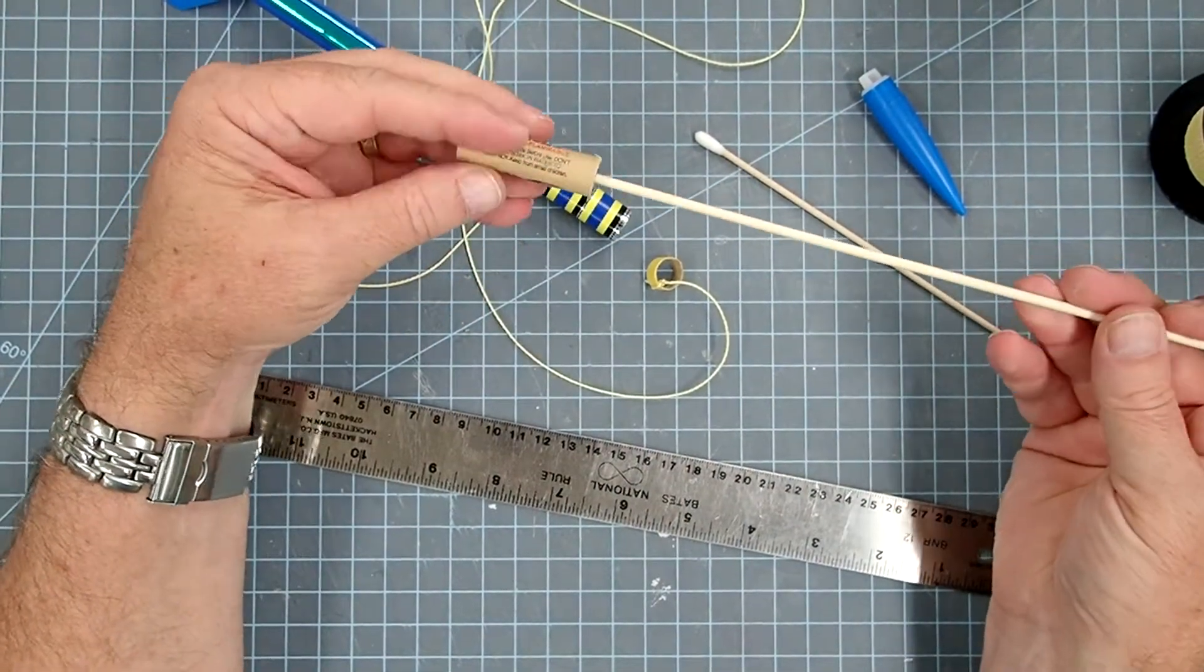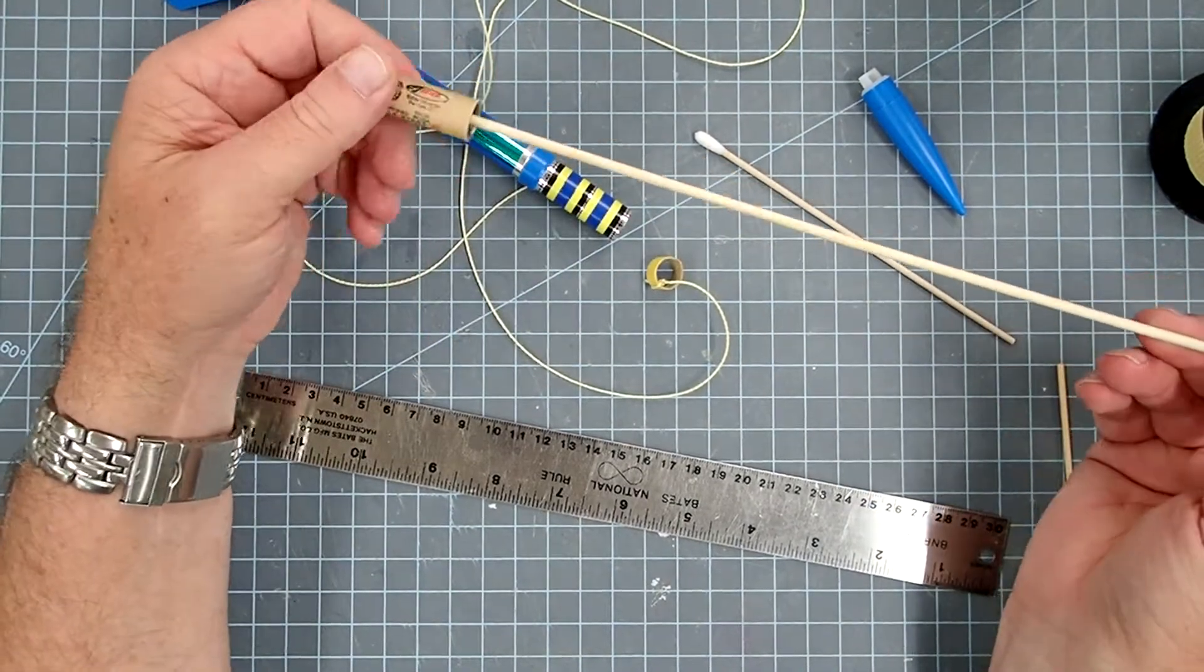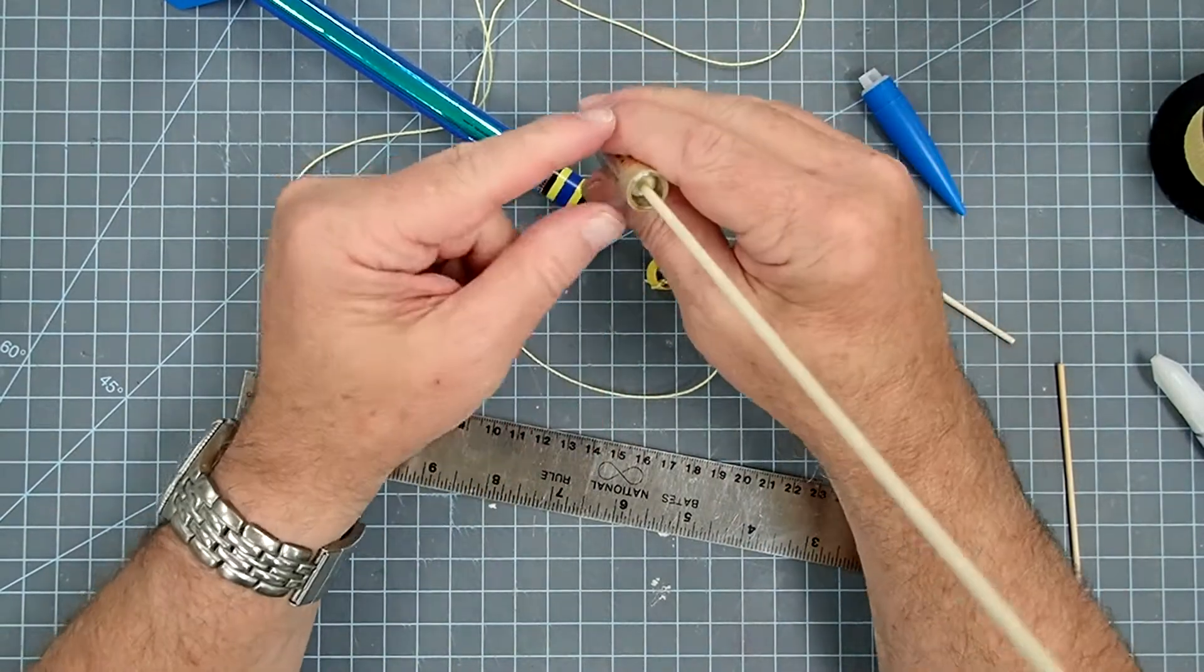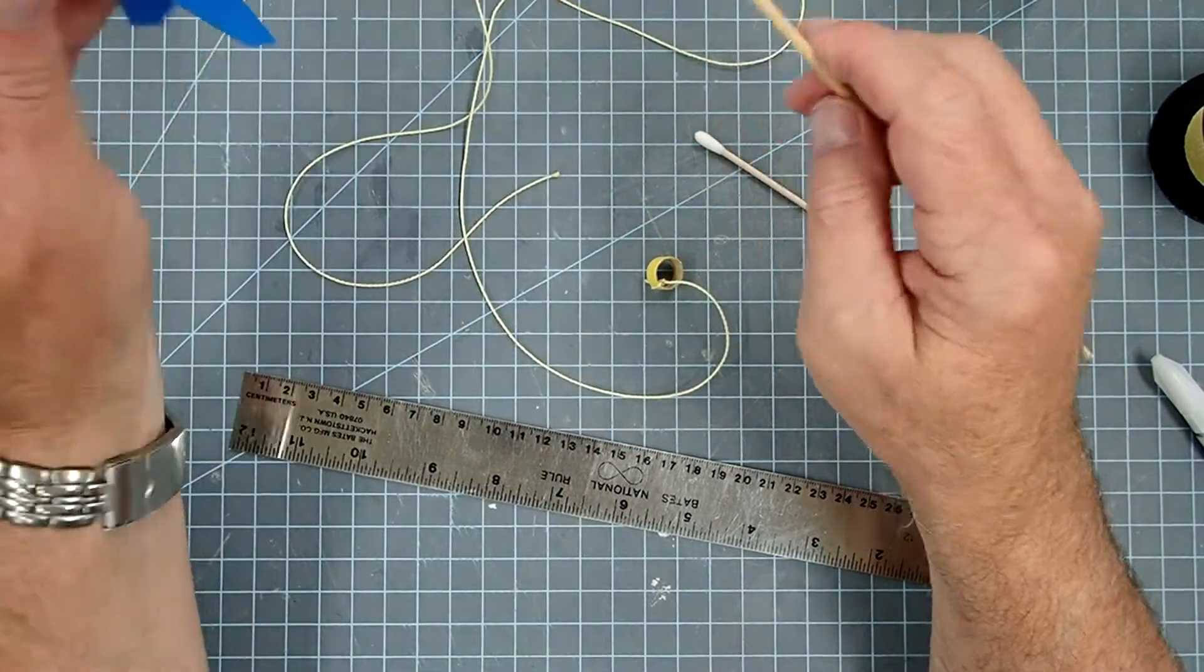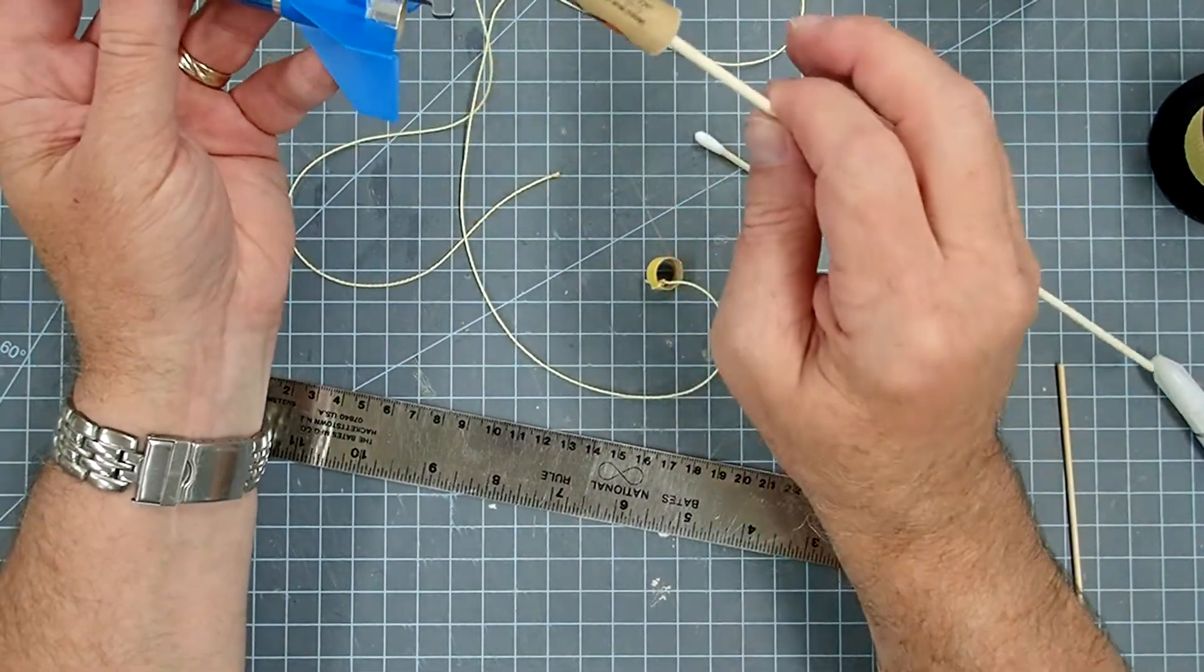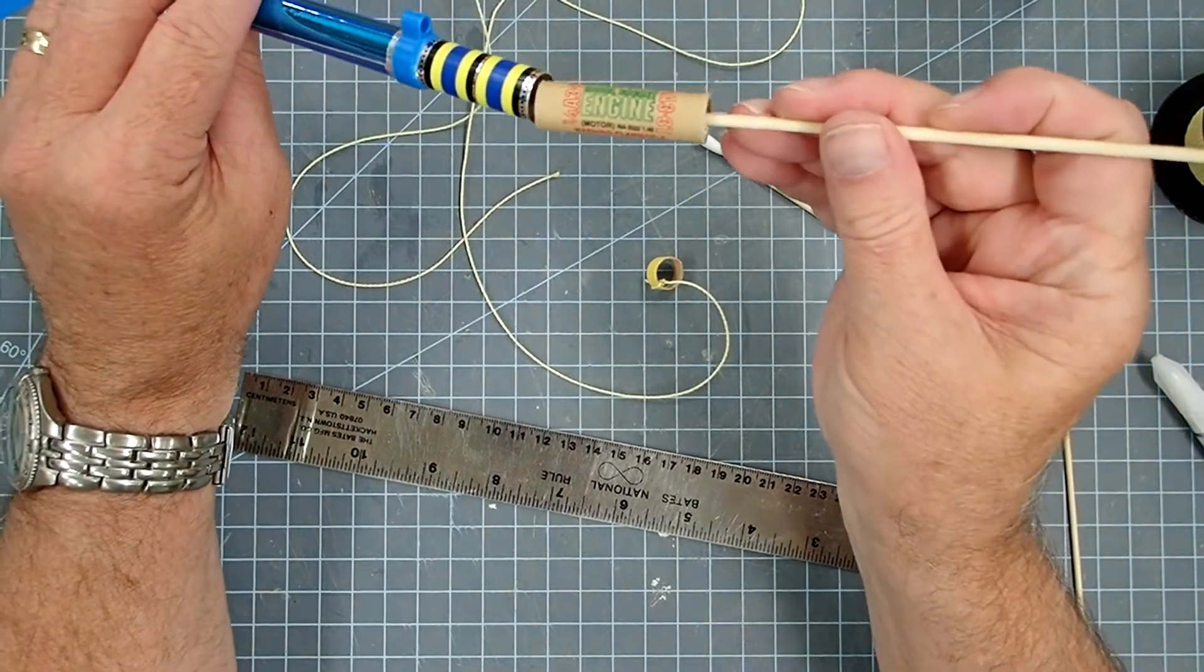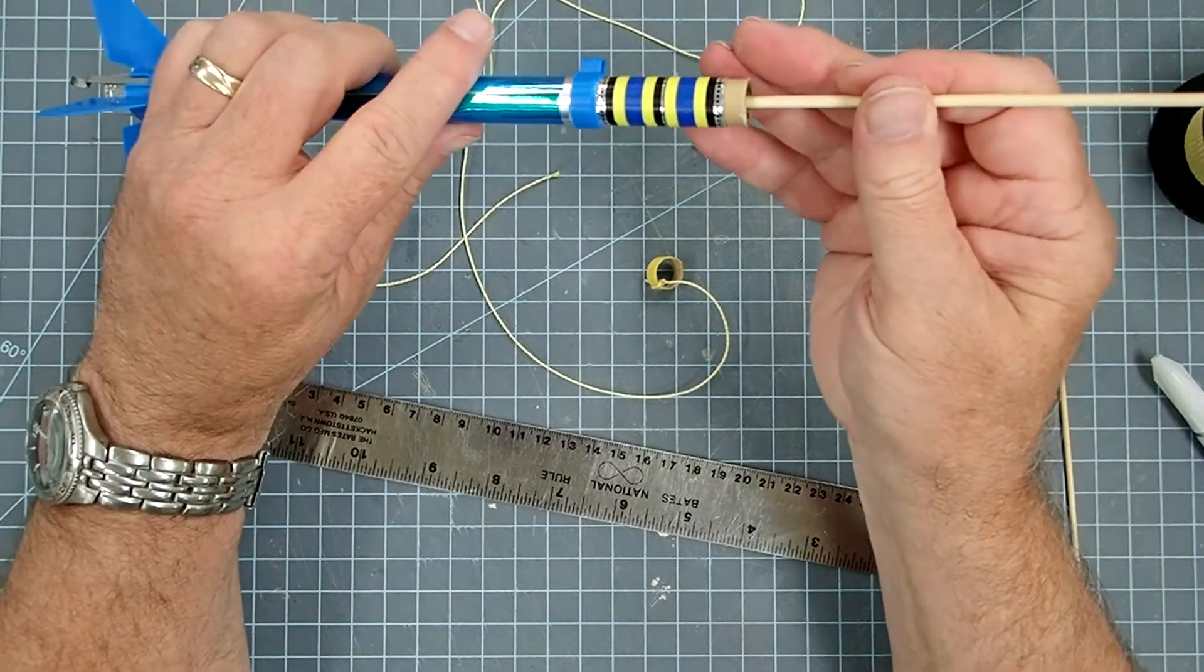It's simply a bamboo skewer or a small dowel that's attached to a spent engine and the inside's filled with tissue and glue. So normally I would stick this up in the engine mount while I'm painting a rocket to keep my hands from getting all painted. But in this case, I'm going to use this to push my ring down into the rocket.